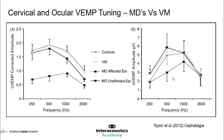Now looking at cervical and ocular VEMP tuning in groups with Meniere's disease versus vestibular migraine. As mentioned, migraine and Meniere's have this overlap — we often think of three groups: migraine-associated vertigo, Meniere's disease with associated migraine, and migraine affecting endolymphatic changes in the inner ear. Looking at corrected amplitude in the Meniere's disease affected ears, amplitudes are larger at 1 kHz versus 500 Hz — consistent with the other articles. On the O-VEMP as well, larger amplitudes at 1000 Hz compared to 500 Hz are seen in the Meniere's groups, showing much steeper tuning than expected in normal controls.